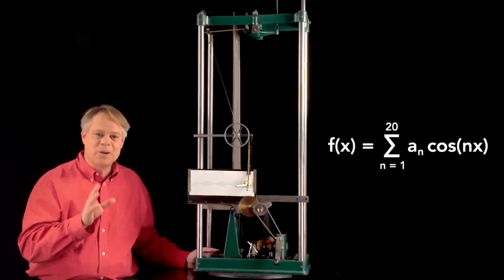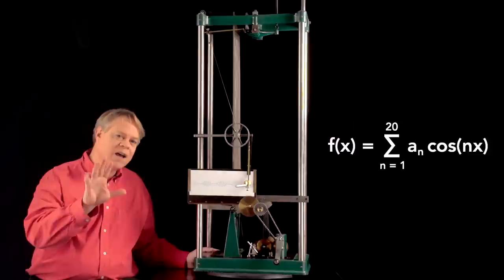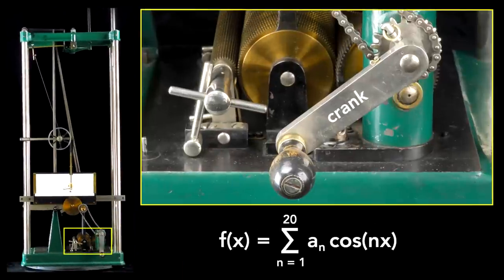Here's how this mechanical marvel implements that function. The machine has five key sections. First, a crank that varies X.